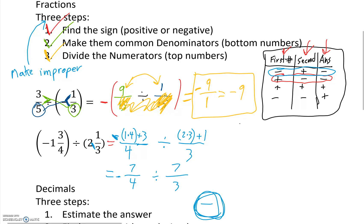So let's do another second check mark. Find the sign. It's negative. Boom. Negative. Green. Step 2, make them common denominators. The bottom number is the same.